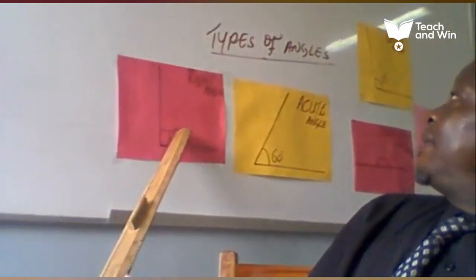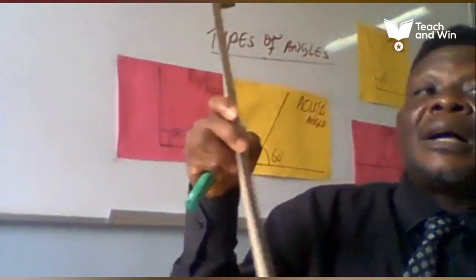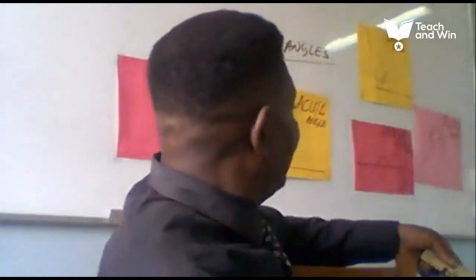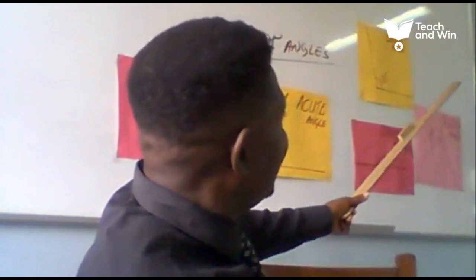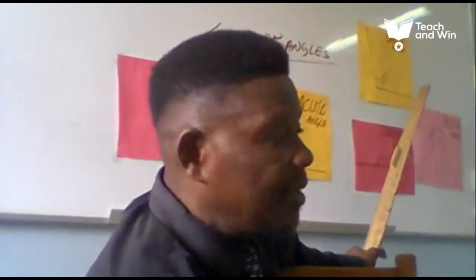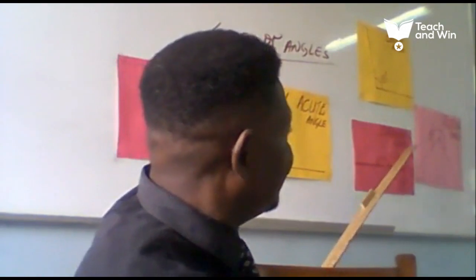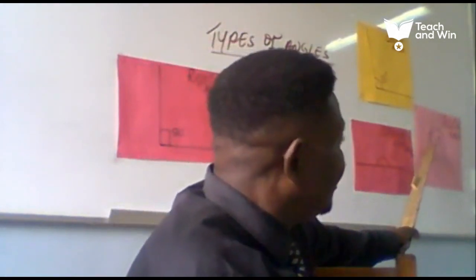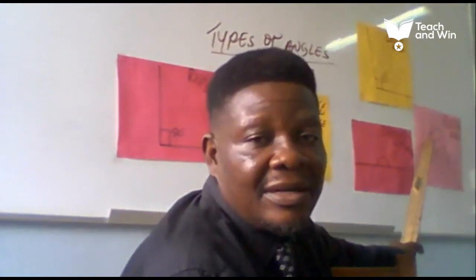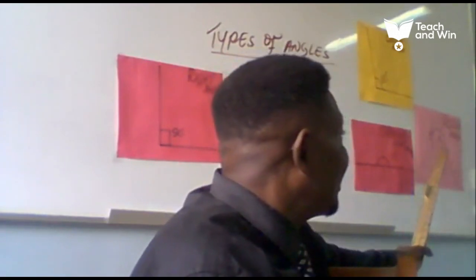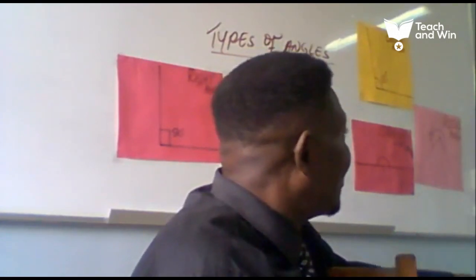So to recap: a right angle is 90 degrees. Acute angles are angles that are less than 90 degrees. Then we have obtuse angles — angles that are more than 80 degrees but less than 180 degrees. An angle on a straight line is called a straight line angle. Then angles that are less than 360 degrees but more than 180 degrees are called reflex angles.